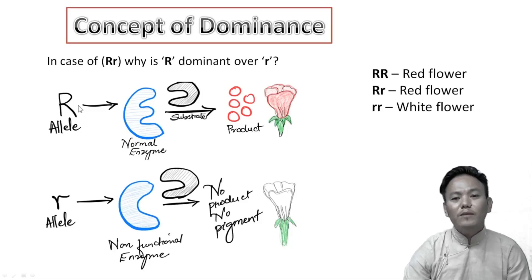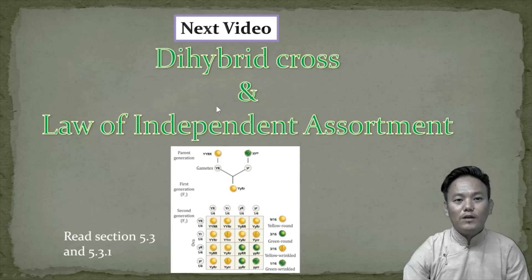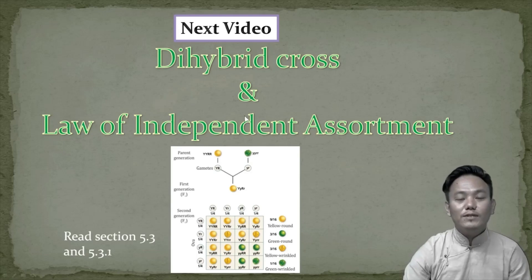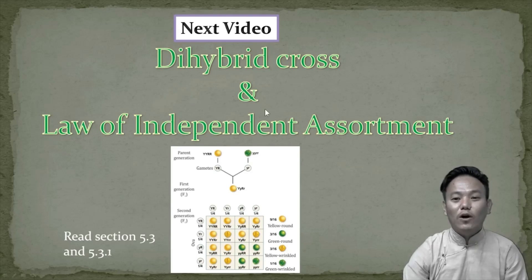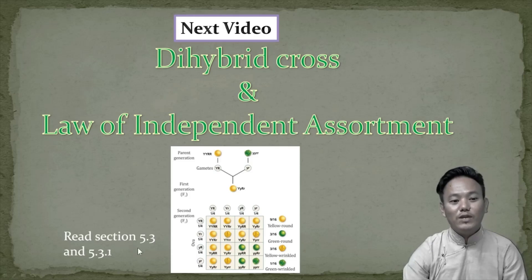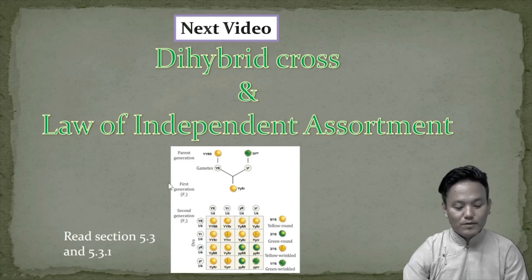For the next video we are going to discuss dihybrid cross and the law of independent assortment. You should read sections 5.3 and 5.3.1 in your textbook before watching the next video. Thank you, see you in the next video.